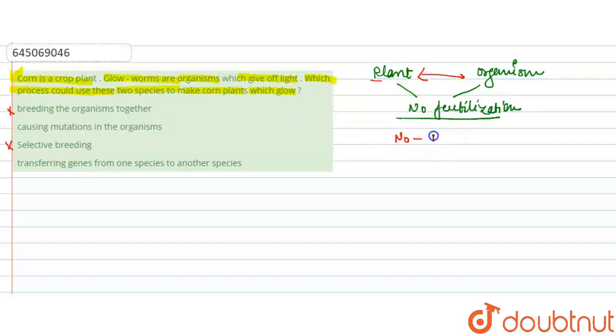Now remaining option, causing mutation in the organism. Here the mutation is not causing in organism, this is again incorrect option because the mating is not done here, fertilization is not done here, so the mutation is not occurring in the organism. This will be again incorrect one. So the correct answer here is option D.